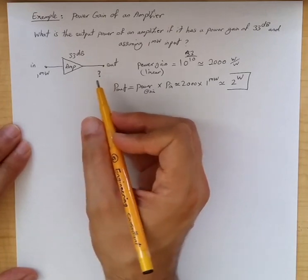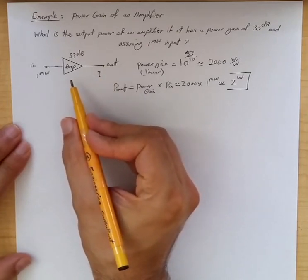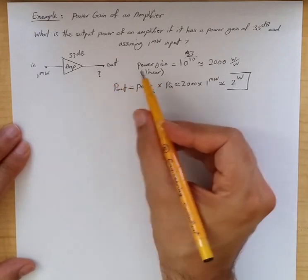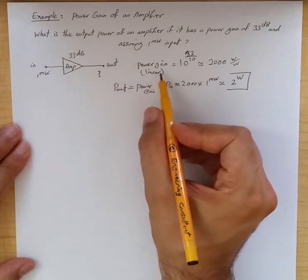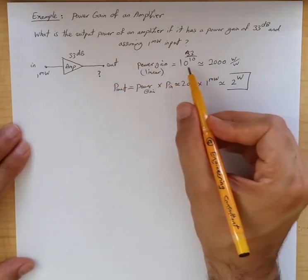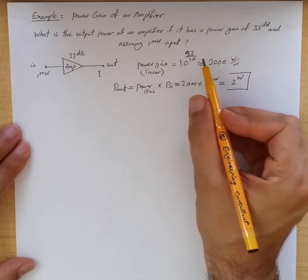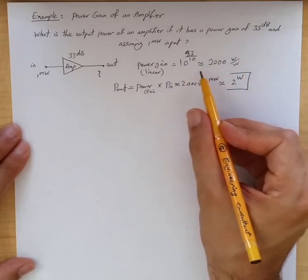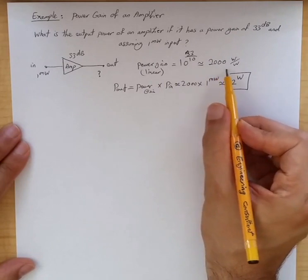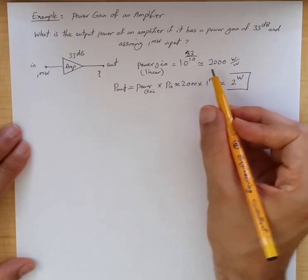You can do this computation both in linear scale and in dB scale. Let's say you're doing it in linear scale, so power gain in linear would be 10 to the power of 33 over 10, because 33 dB is the power gain of an amplifier. That is roughly 2,000. That's the power gain of the amplifier.